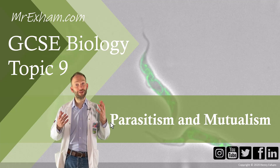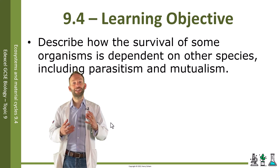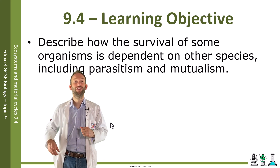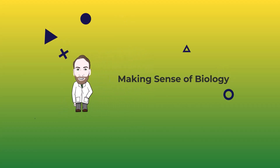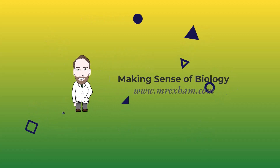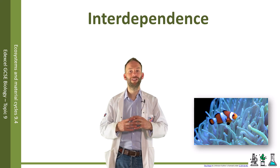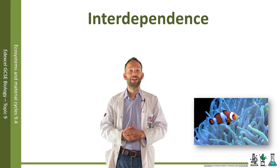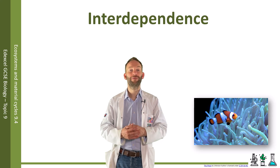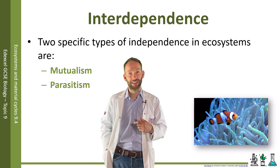Objective 9.4: describe how the survival of some organisms is dependent on other species, including parasitism and mutualism. As already mentioned, organisms in a community share the same habitat and are dependent on each other. There are two specific types of interdependence in ecosystems we're going to look at now: mutualism and parasitism.